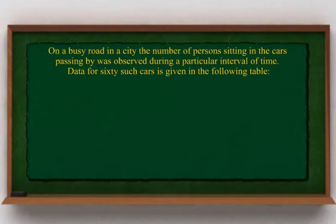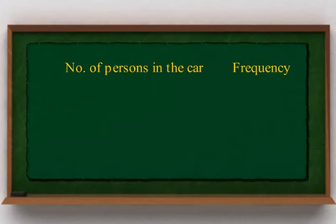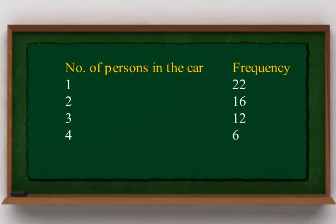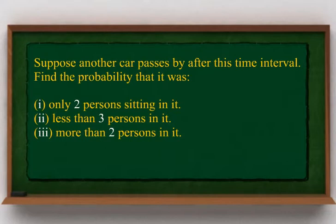On a busy road in a city, the number of persons sitting in cars passing by was observed during a particular interval of time. Data for 60 such cars is given in the following table. Number of persons in car — Frequency: 1 → 22, 2 → 16, 3 → 12, 4 → 6, 5 → 4.